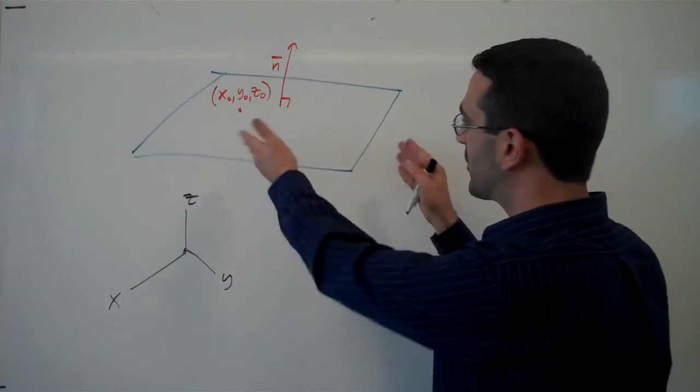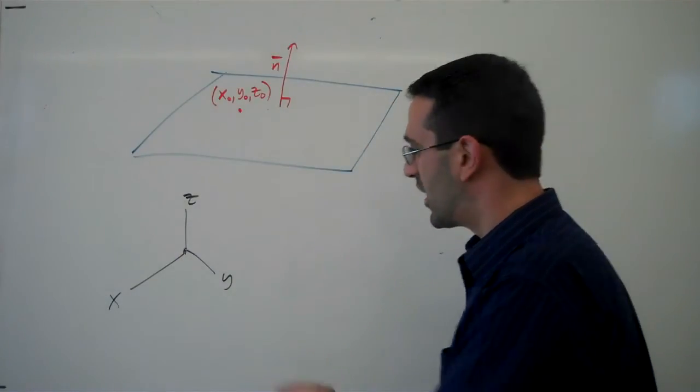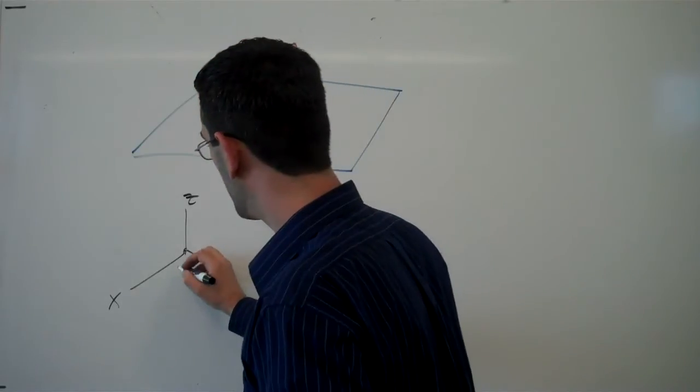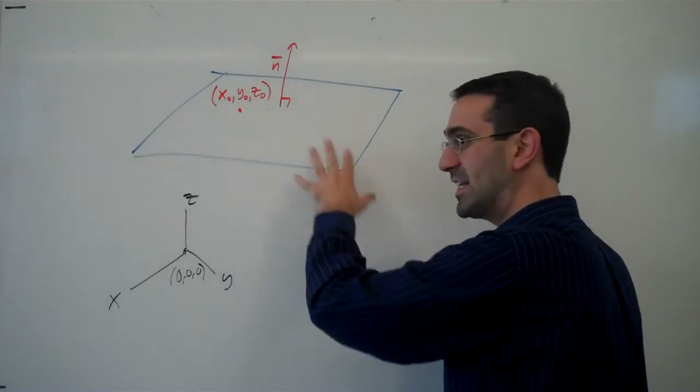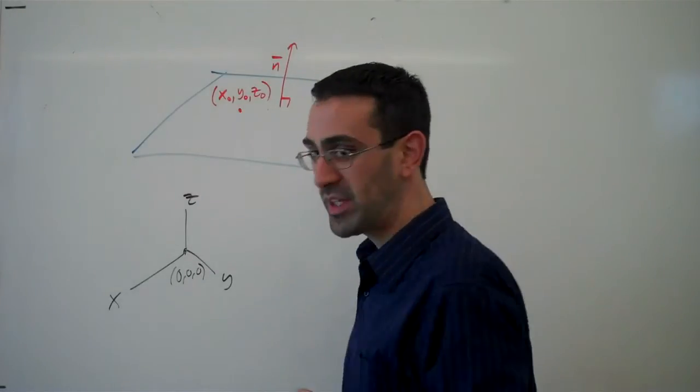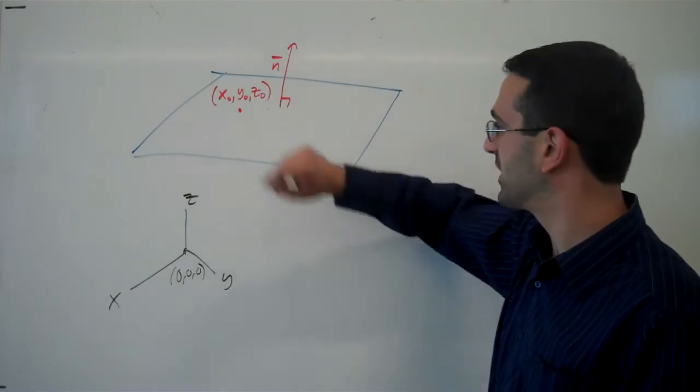Suppose we're trying to find the equation for this plane. We know that the origin is down here somewhere at the point (0, 0, 0). We have a plane up here, and suppose that we know a point on the plane, this x_not, y_not, z_not point.